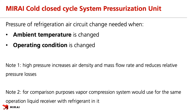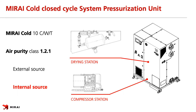As mentioned before, the closed cycle uses pressure change in the air loop to manage operation for reasons such as ambient temperature change or operating condition change. Note 1: high pressure increases air density and mass flow rate and reduces relative pressure losses. Note 2: for compression purposes, a vapor compression system would use a liquid receiver with refrigerant for the same operation. For this reason, closed cycle machines need pressurized air with purity class 1.2.1. You can use an external source if available on site, or use the optional accessory called the System Pressurization Unit installed inside the Mirai Cold closed cycle machine.